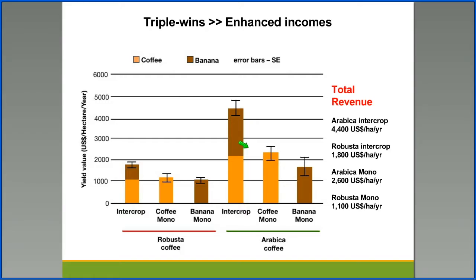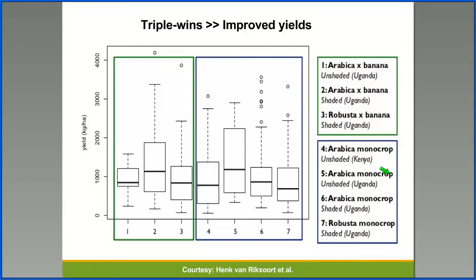One of the first triple wins I would like to talk about is the enhanced income. It's observed that bananas tend to provide about $10,000 US dollars in the years that coffee is not productive. From this graph, we notice that when Arabica coffee is intercropped with bananas, the revenue is around $4,400. However, when Arabica coffee is monocropped, the revenue is just $2,600 US dollars per hectare per year — which is about double.